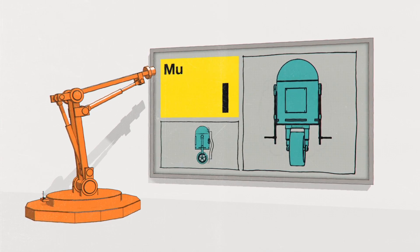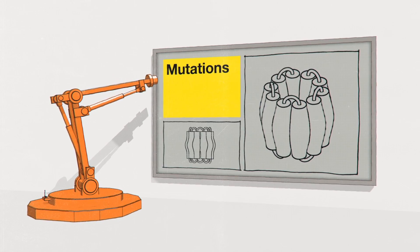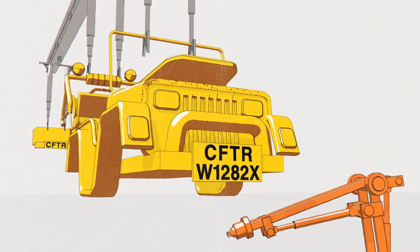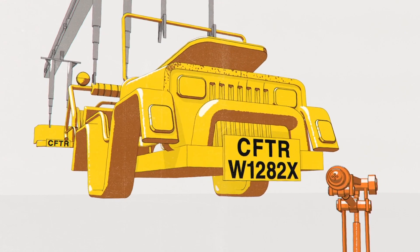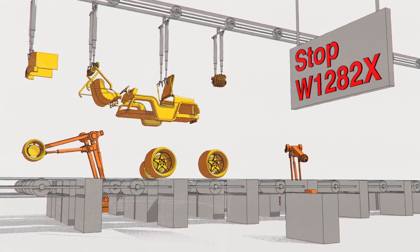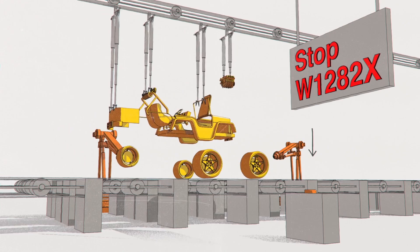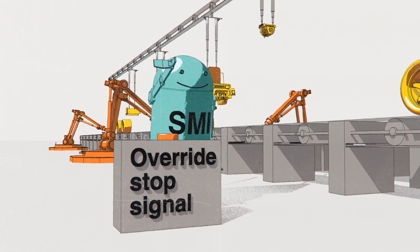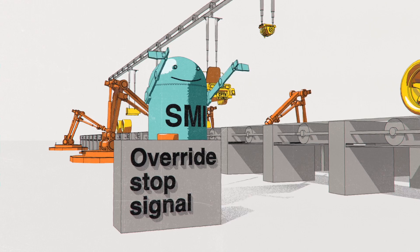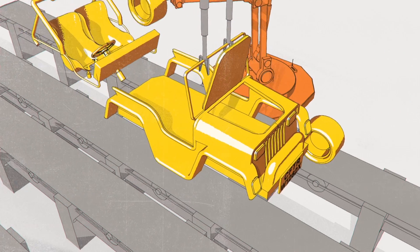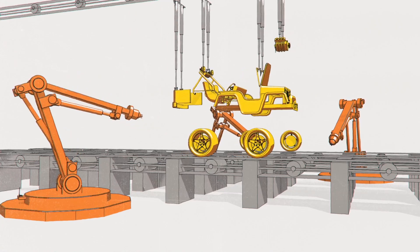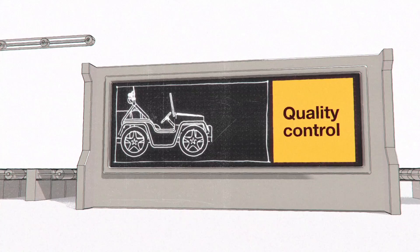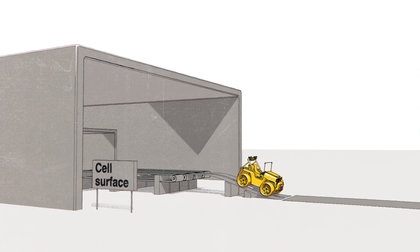There are several types of mutation that can interfere with this process. The first are called class 1 mutations, which are indicated by an X on the end. These tell the cell to stop CFTR production too early. A drug called a read-through is designed to override the stop signal, so the cell can continue to assemble the components for the CFTR protein. As before, the car then passes through quality control and out onto the road.